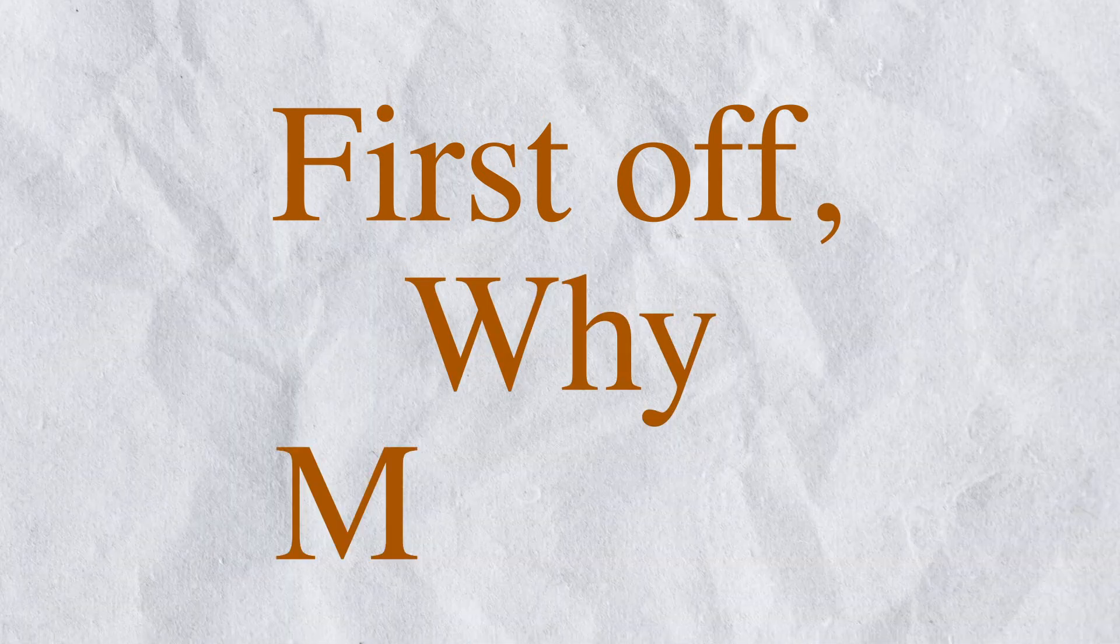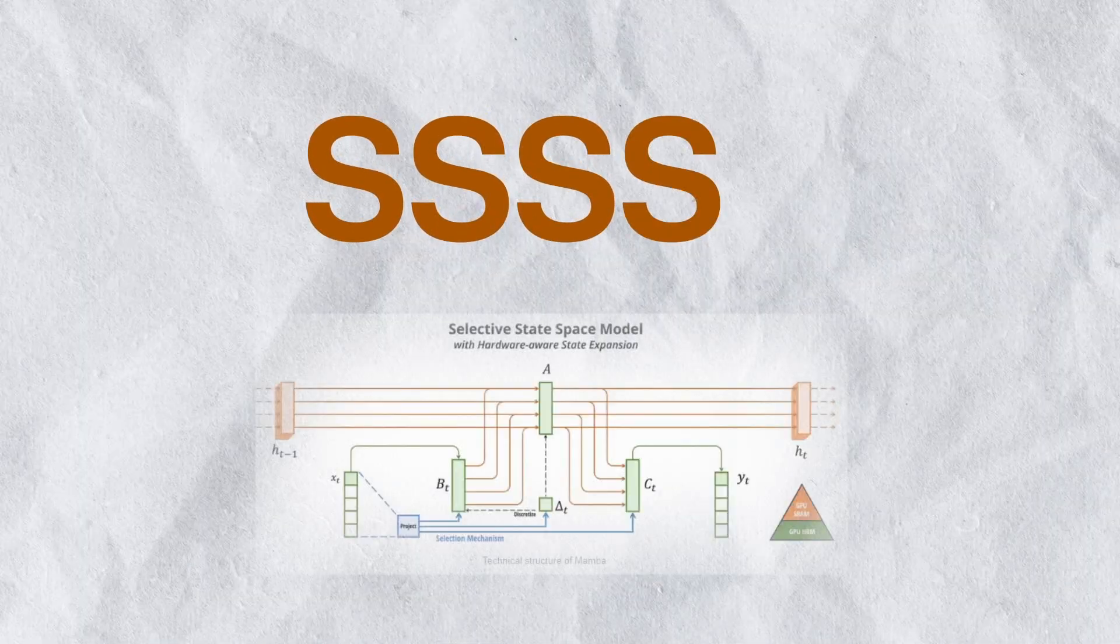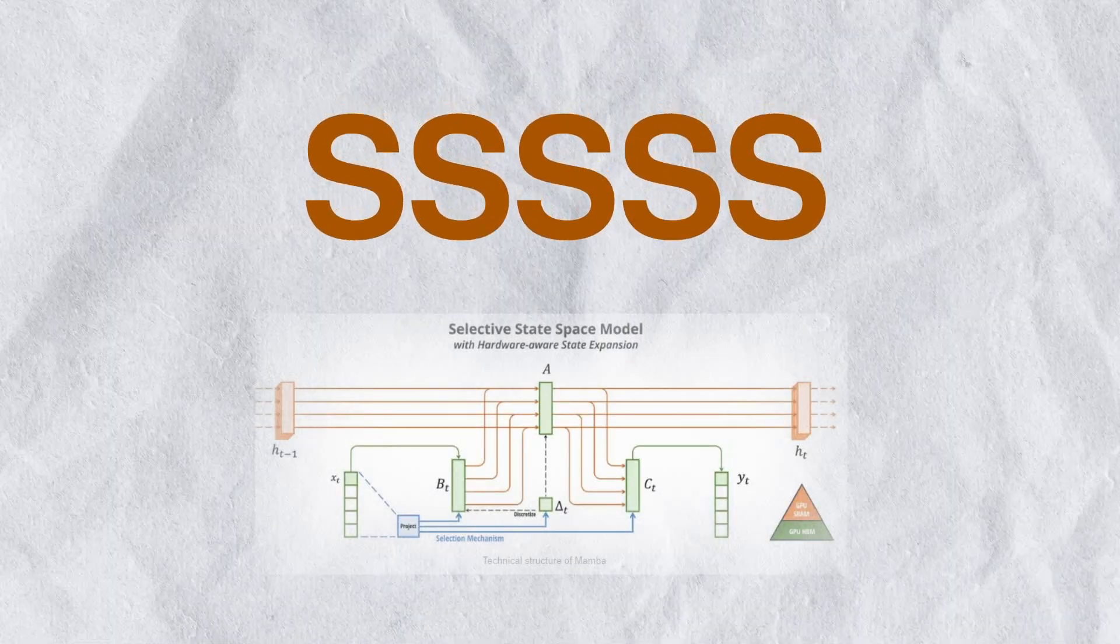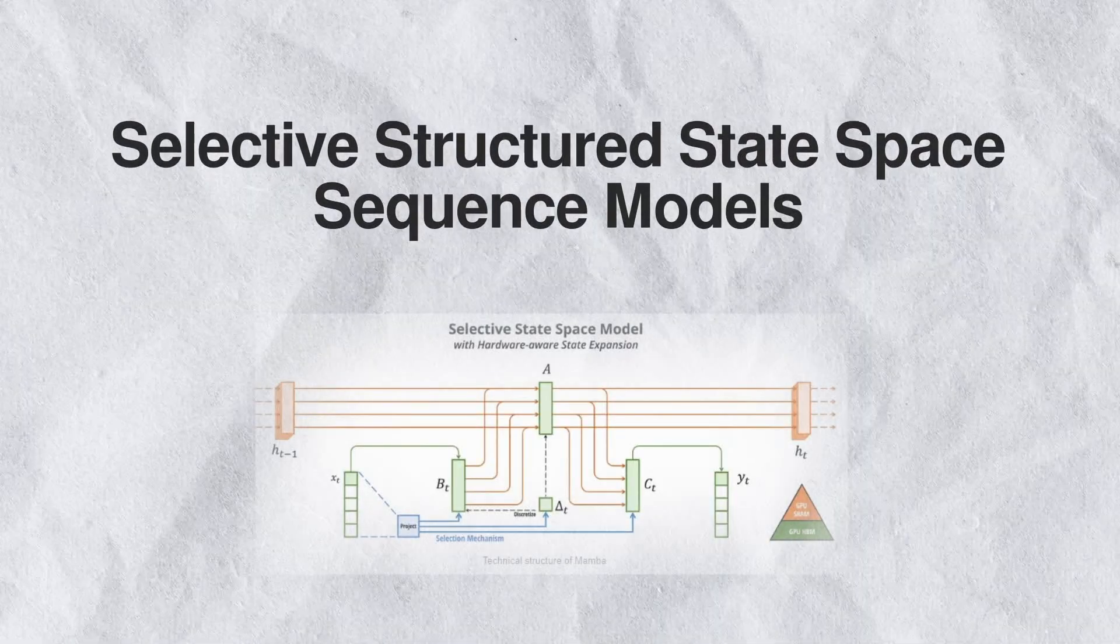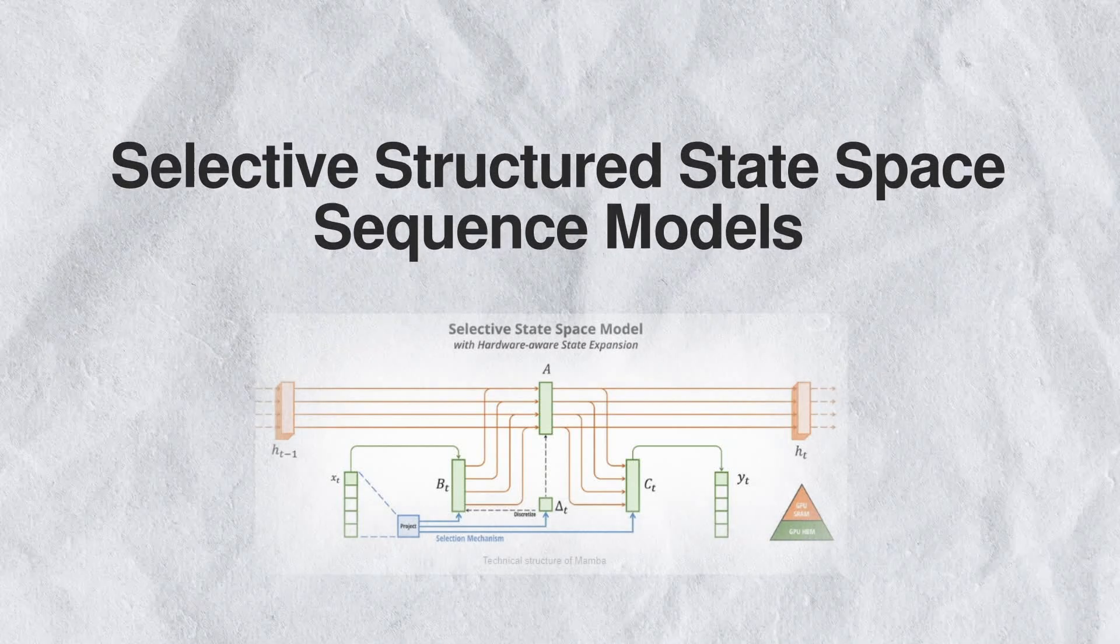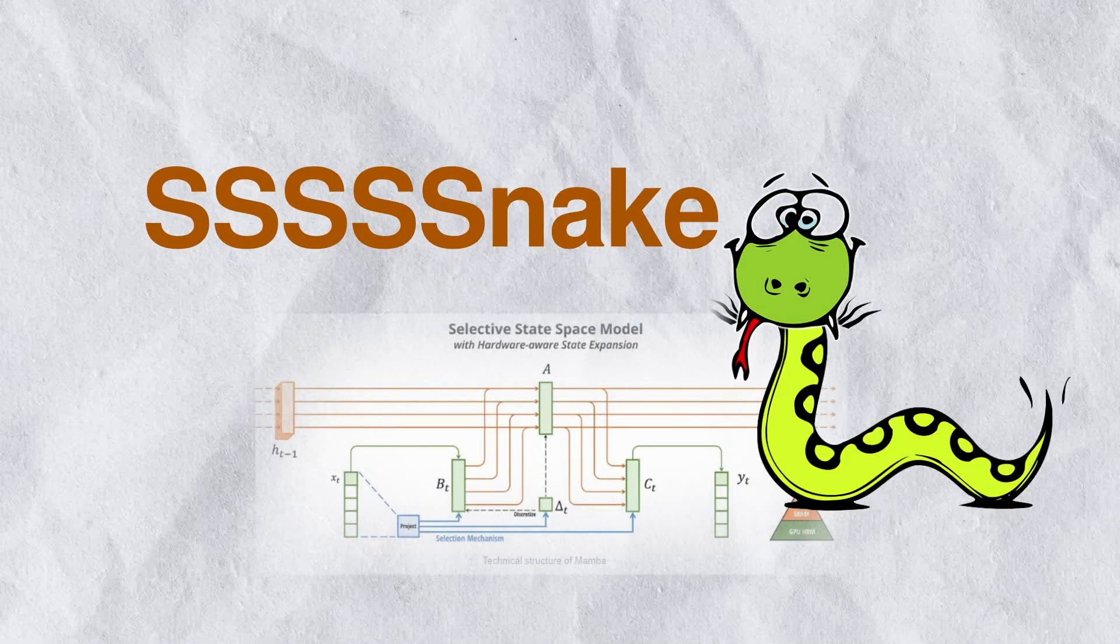First off, why Mamba? Apparently because there are a lot of S's in the base model architecture of it, which is called selective structured state space sequence models, which resumes the language of a snake.